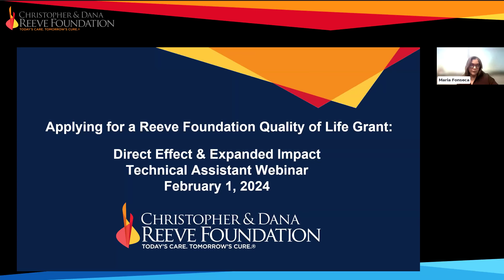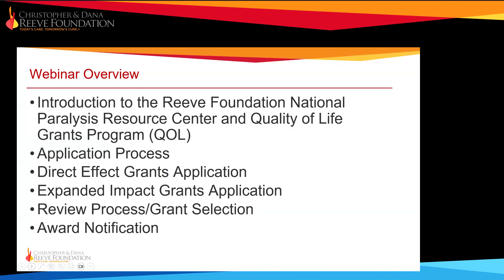Keep an eye on the Q&A — questions and answers will be posted on our website in a few days, along with this presentation and the slides. Today we'll cover the Reeve Foundation National Paralysis Resource Center and its programs, the application process, the two tiers offered this cycle — Direct Effect grants and Expanded Impact — the review process, important dates, how grant selection is notified, and how awards are issued.